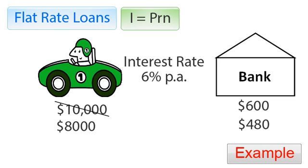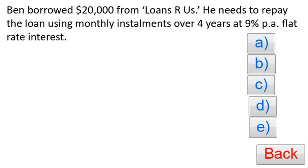Because this is called a flat rate loan, the rate stays flat. So when you've paid off part of your loan, you're still paying $600 in interest rather than $480. For our example: Ben has borrowed $20,000 from Loans For Us and needs to repay the loan using monthly installments over four years at nine percent per annum flat rate interest.